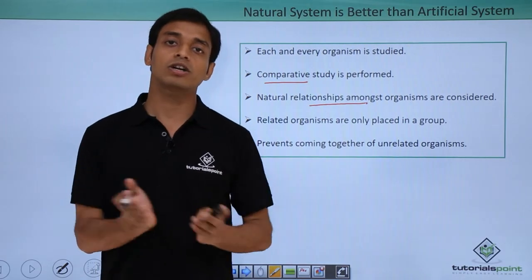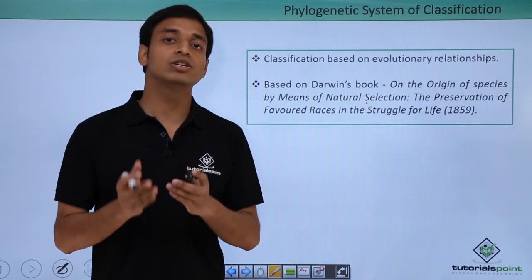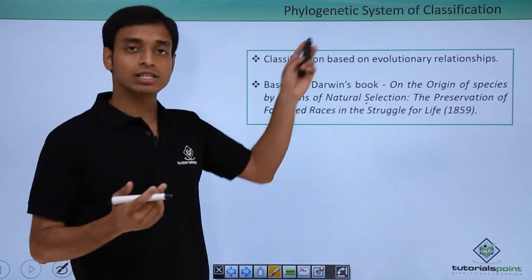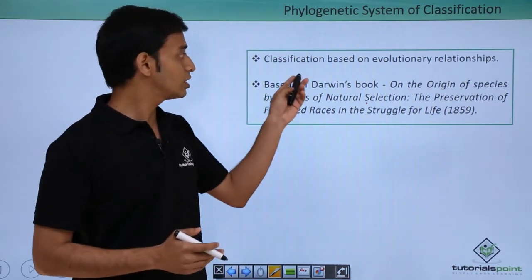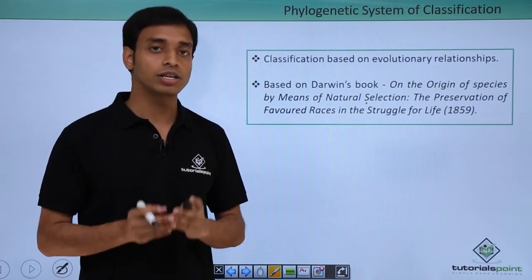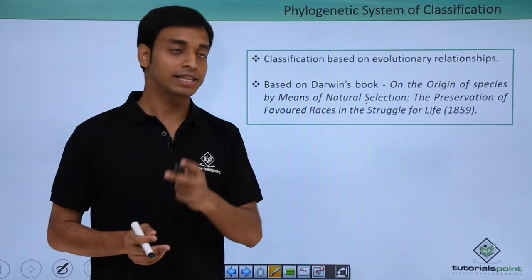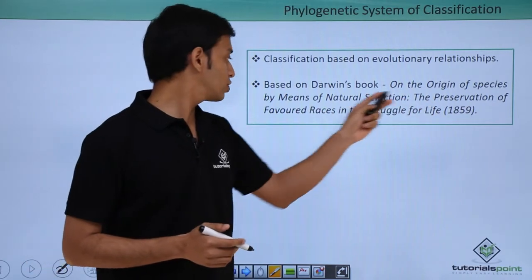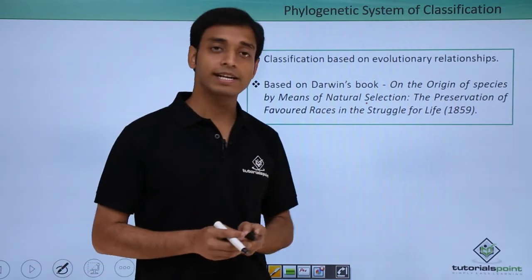After the natural system, a new system was put forward known as the phylogenetic system of classification. This system uses characteristics based on evolutionary relationships, and most importantly draws on Darwin's book 'On the Origin of Species by Means of Natural Selection, the Preservation of Favoured Races in the Struggle for Life,' published in the year 1859.